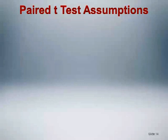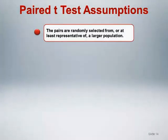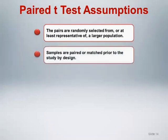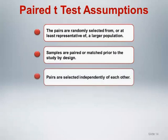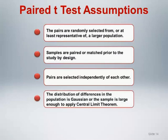The assumptions for the paired t-test are as follows: the pairs are randomly selected from or representative of a larger population; samples are paired or matched prior to the study by design; pairs are selected independently of each other; and the distribution of differences in the population is Gaussian or the sample is large enough to apply the central limit theorem. Note that unlike the unpaired t-test, where the Gaussian assumption applies to the distribution of values in each group, here the Gaussian assumption applies only to the paired differences.